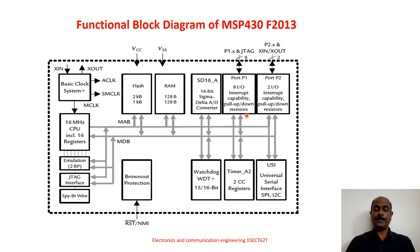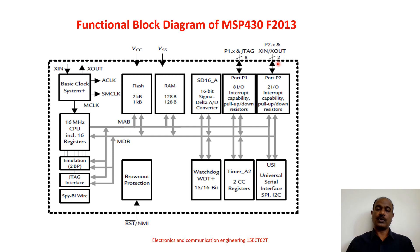There are two ports available inside this F2013 microcontroller. One is called port P1 and the other is port P2. Port P1 has 8 pins — P1.0 to P1.7. Port P2 has only two pins available for the user: P2.6 and P2.7. That is why only two is written here — only two pins are available for the user.